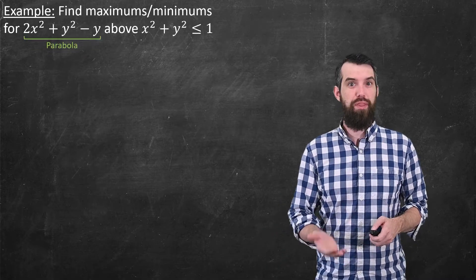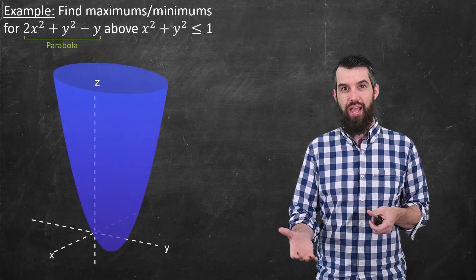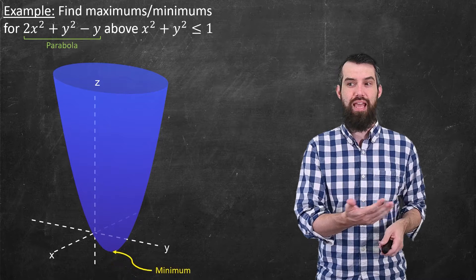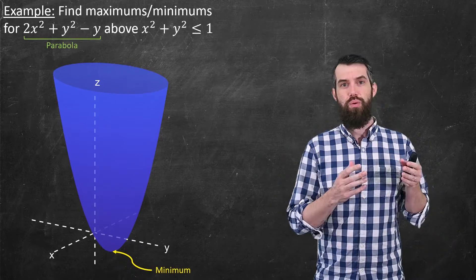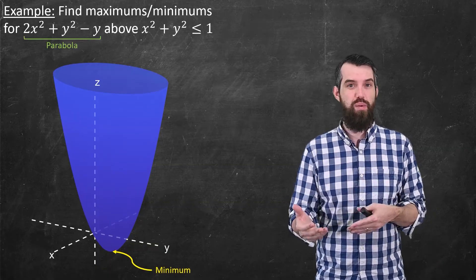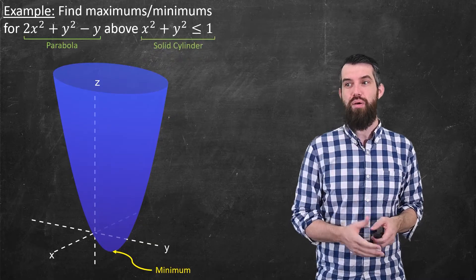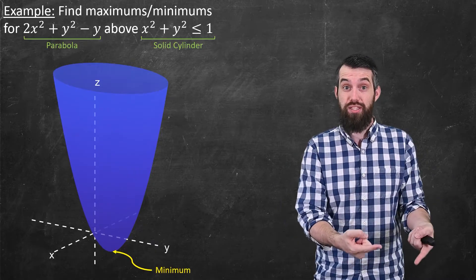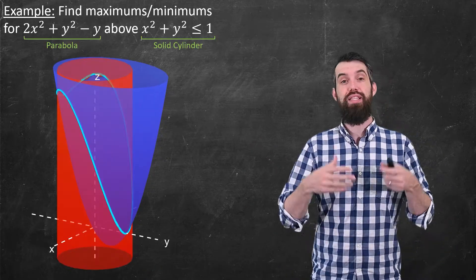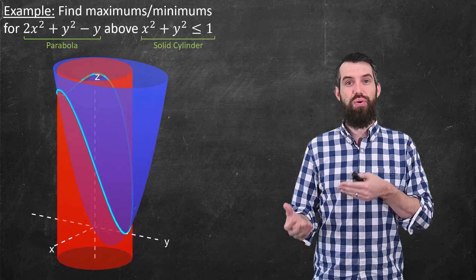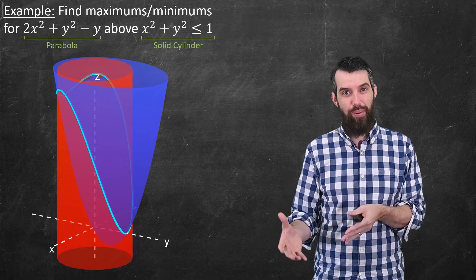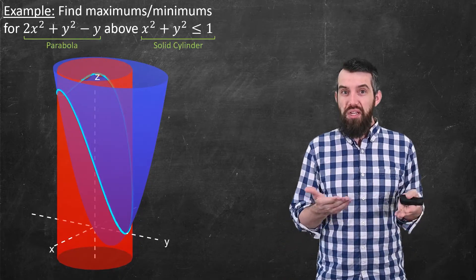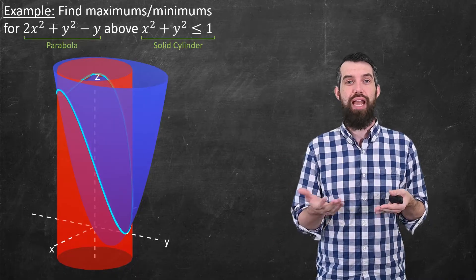How do I visualize this? The function 2x² + y² - y is just a parabola when plotted. Now, the condition x² + y² ≤ 1 is not just the boundary circle x² + y² = 1, it's that circle and all points inside it — so what this really looks like is a cylinder. I've drawn in light blue the intersection between the cylinder and the parabola. So I'm trying to find the maximums or minimums of that blue parabola, given the constraint that I'm only allowed to consider points inside this cylinder x² + y² ≤ 1.